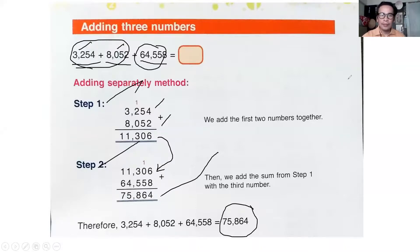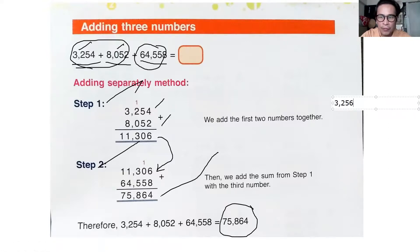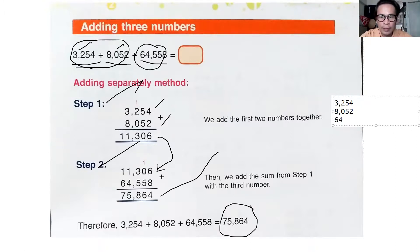Or if you don't want to follow step one and step two, you can add all three numbers together directly. For example: 3,254 plus 8,052 plus 64,558. Notice that 64,000 is in the ten-thousands place while 8,052 — its highest place value is in the thousands. So you have to align them properly.